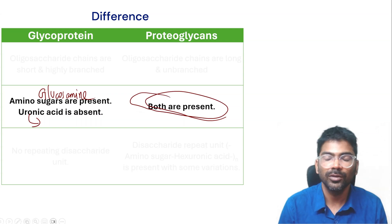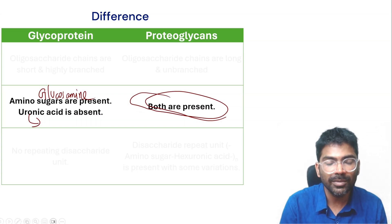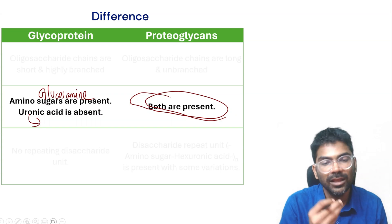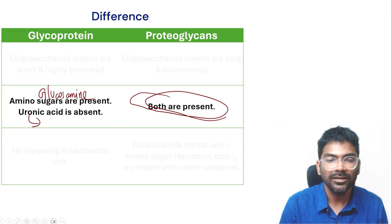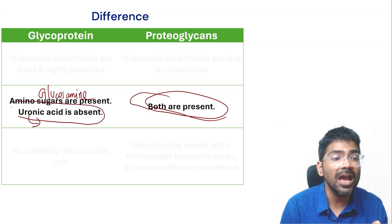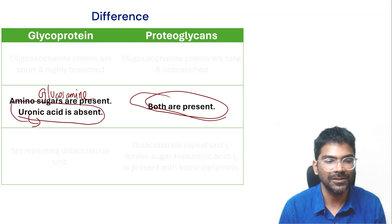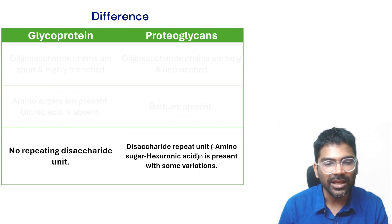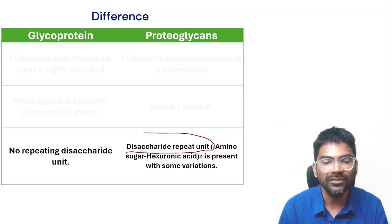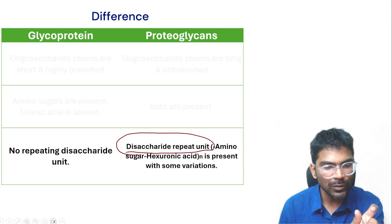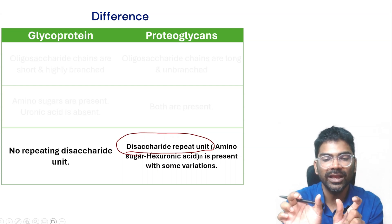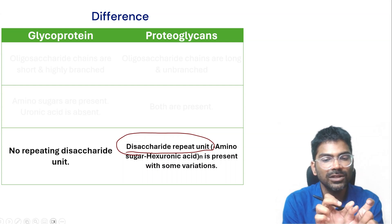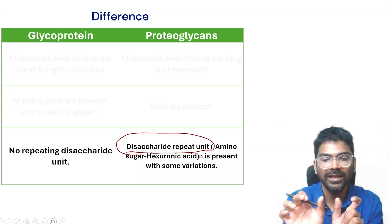Whereas in proteoglycans, you will find both: N-acetyl glucosamine, iduronic acid, and glucuronic acid are all present. As mentioned, in proteoglycans there is a disaccharide repeat unit made up of an amino sugar and a hexuronic acid — for example, N-acetyl glucosamine and glucuronic acid.